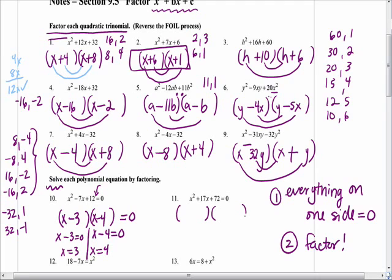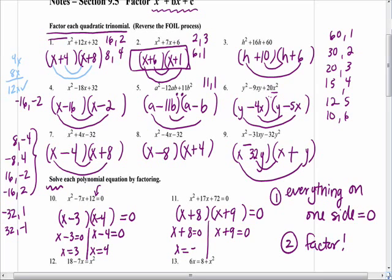Let's do number 11. Already everything is on one side equal to zero, so we're good. Commit to your x times x. Now think factors of 72 — I haven't listed them, but I already have hands up. 8 times 9 is 72, and 8 plus 9 is 17. Good. Now set each factor equal to zero.